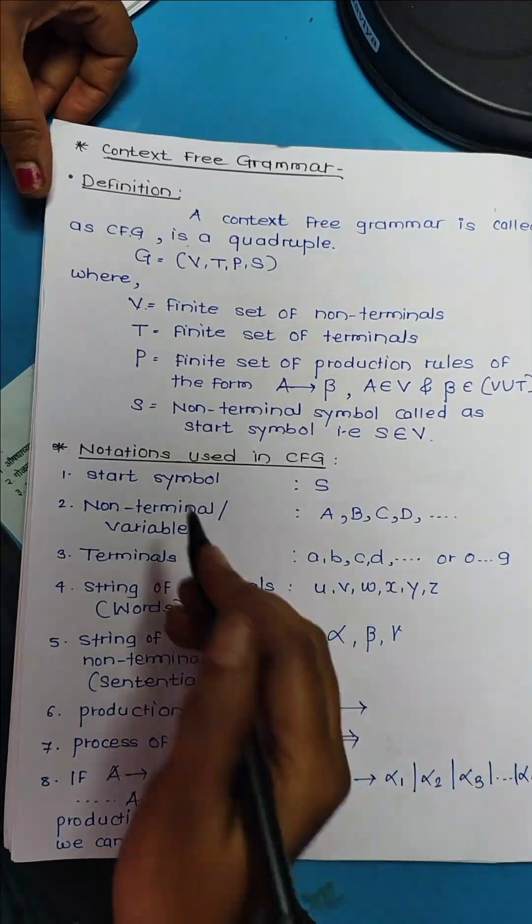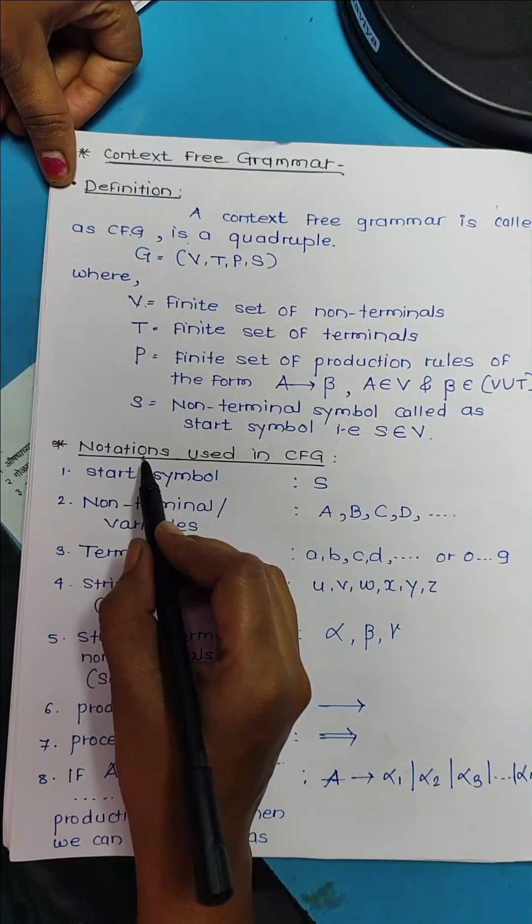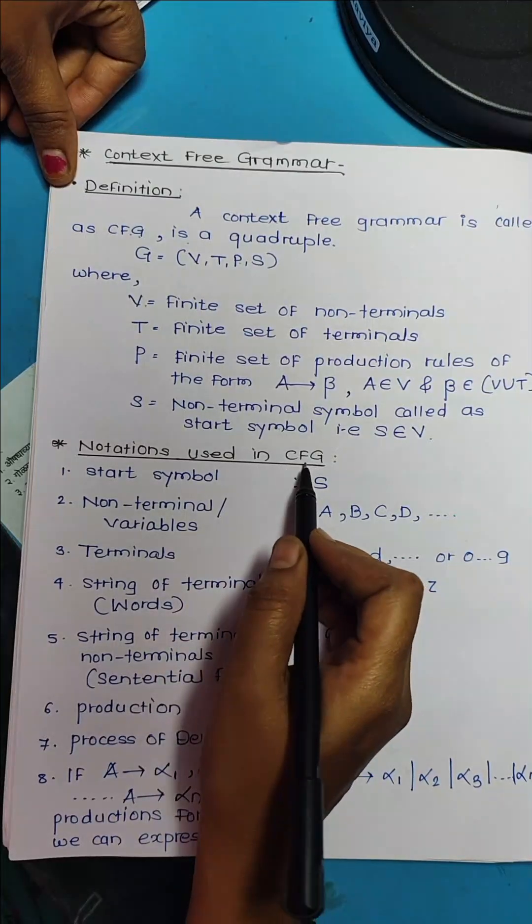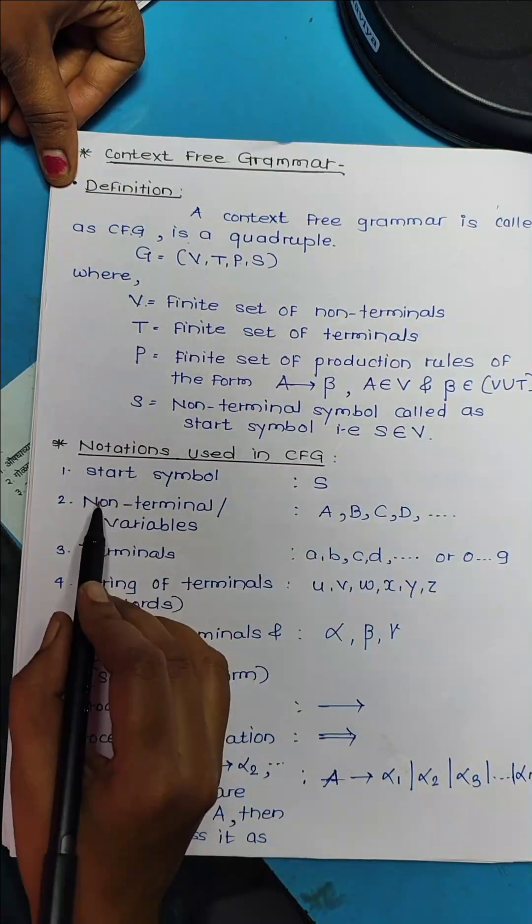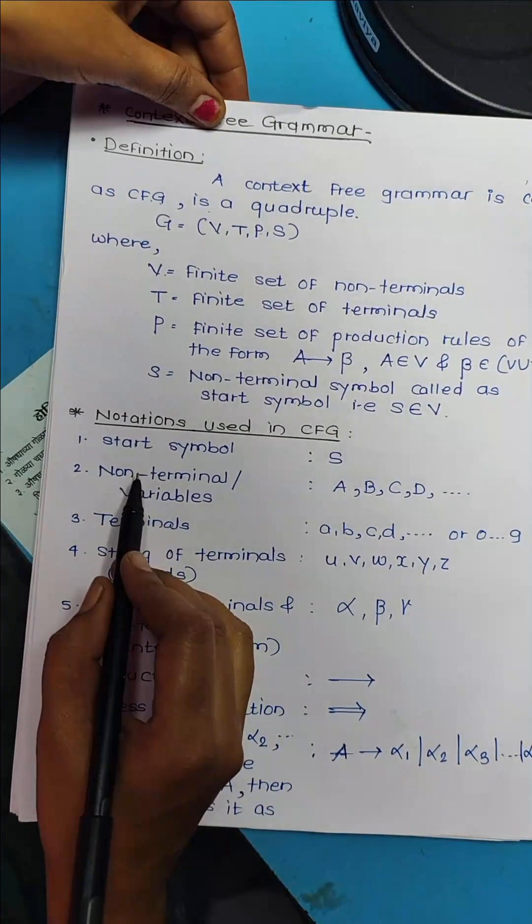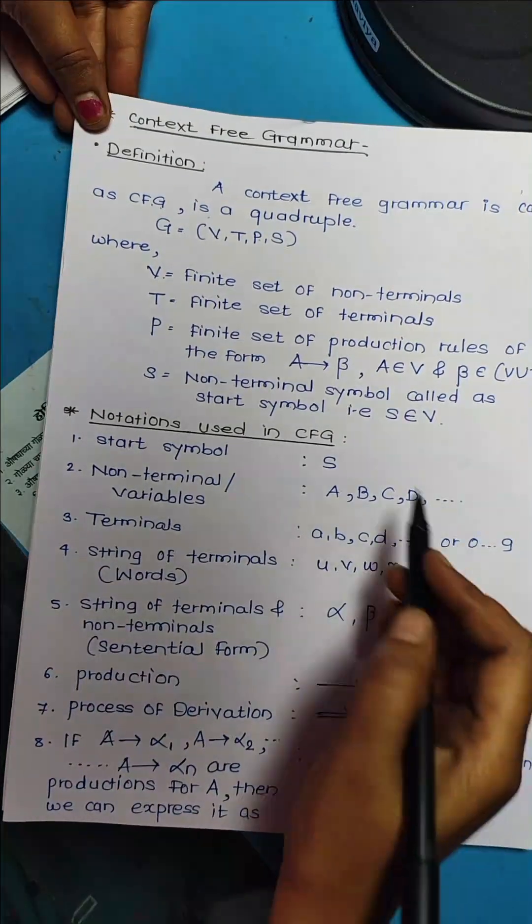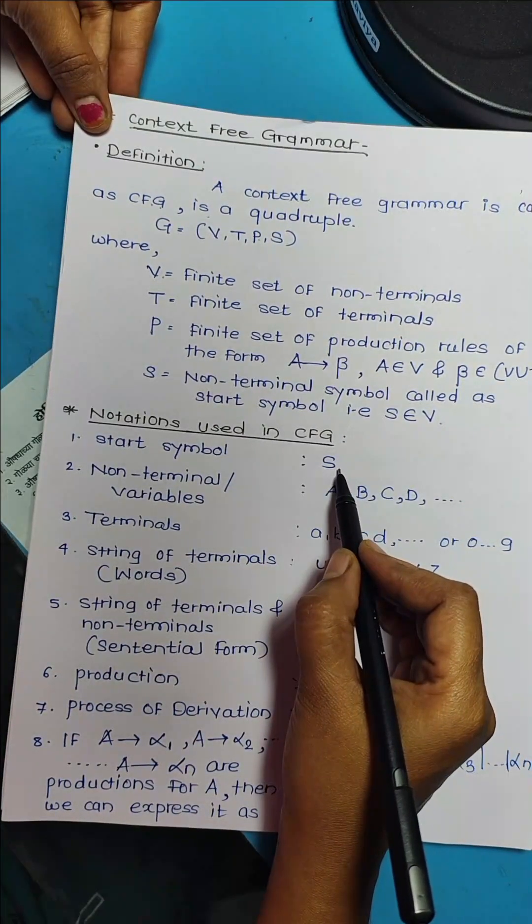Now let us see the notations which are used in context-free grammar. The first notation is the start symbol, which is denoted by capital S.